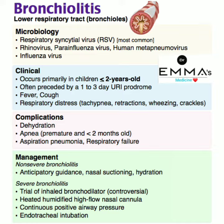Bronchiolitis mainly occurs in children less than or equal to 2 years old. It is often precipitated by a 1 to 3 day upper respiratory tract infection prodrome, followed by fever, cough, and respiratory distress including tachypnea, retraction, wheezing, and crackles.